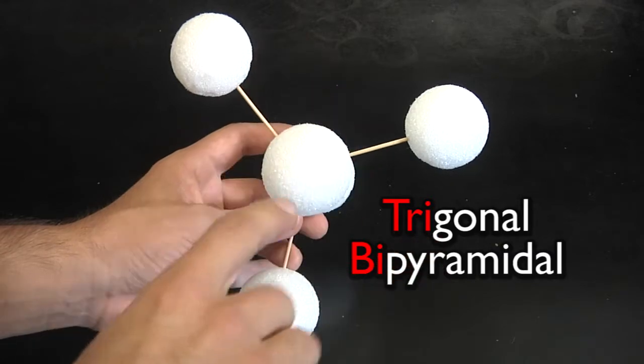This guy we call trigonal bipyramidal. You can see the trigonal shape because it's got three sides that are about 120 degrees apart from each other. Yet it forms two pyramids, one there and one there. That's why it's called trigonal bi, which means two, pyramidal, which means a pyramid.